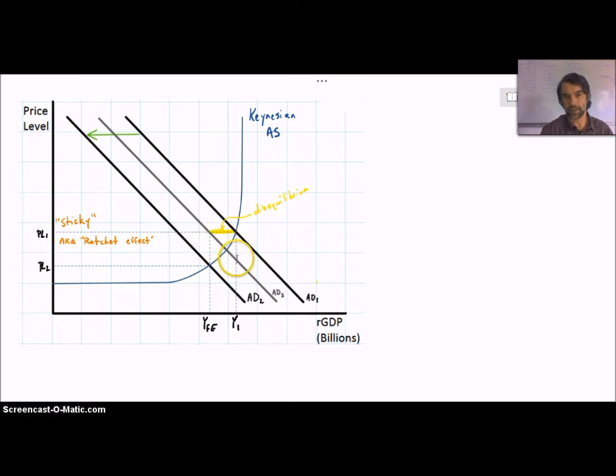Because if prices are sticky, that means we're going to stay at PL1, so that means that we're going to move, as aggregate demand moves to the left, we're not going to get to equilibrium. Instead, we're going to find at PL1, YFE is achieved when aggregate demand is only at AD3. And that might seem like a good thing, like, oh, well, the government doesn't have to do that much. They don't have to cut back that much to get to YFE.